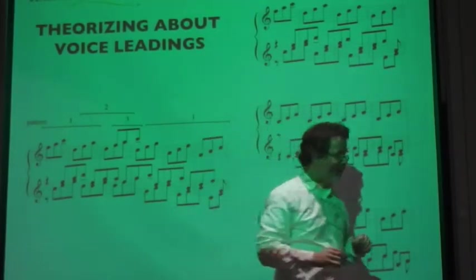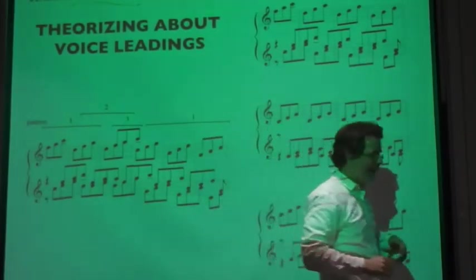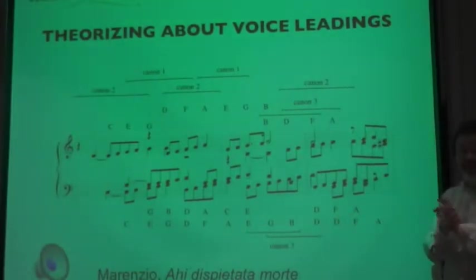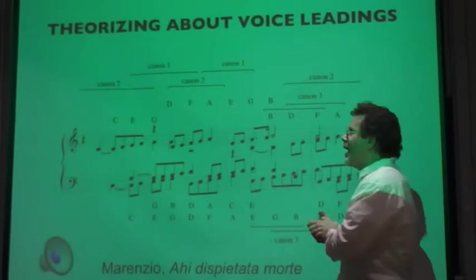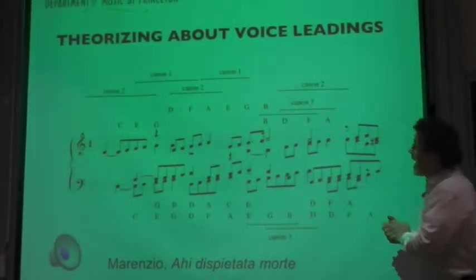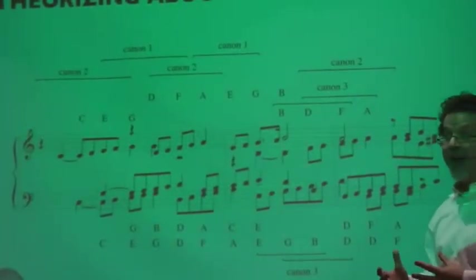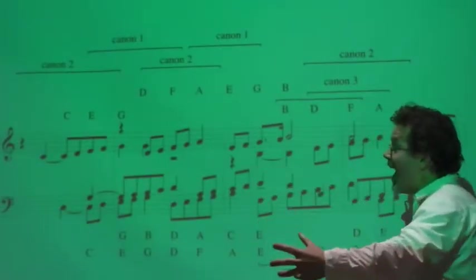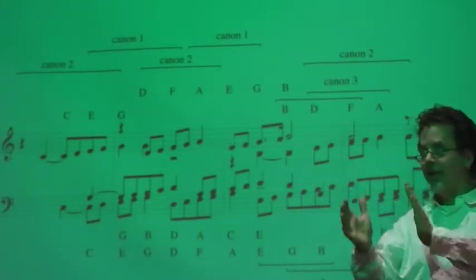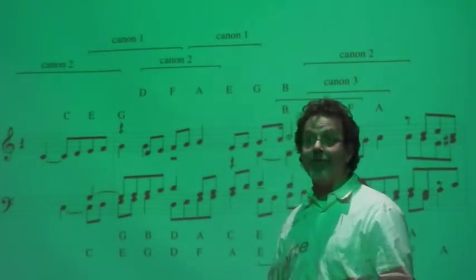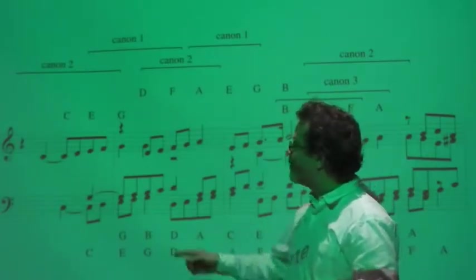The amazing thing is you can put them together in fun ways to embed this family of canons within themselves. The reason I'm mentioning this is because there's a beautiful Renaissance madrigal by the composer Luca Marenzio. The piece is called I Dispietatum Morte. It's about a terrible death. The lover is singing to his beloved who has died about how horrible death is.